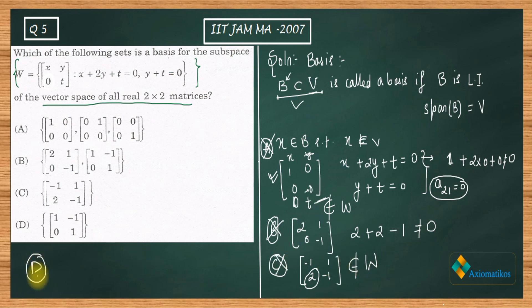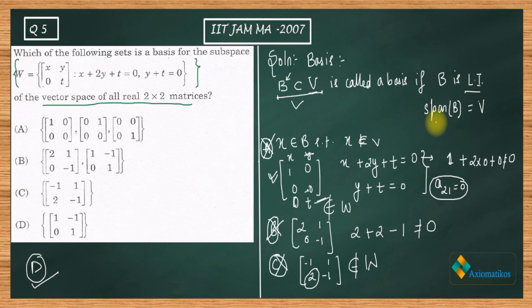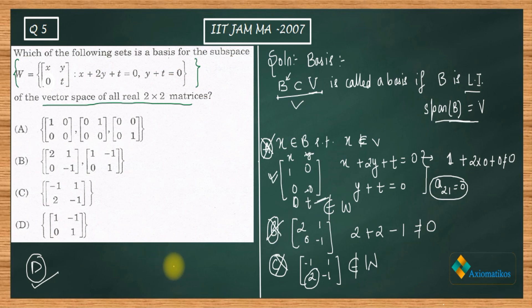Therefore we don't need to check Option D — it must be the basis. You can verify: it is a singleton set with a non-zero element, so it is linearly independent. You then need to check whether the span of this set equals W. By discarding all other options, we have proved that Option D is the correct answer.